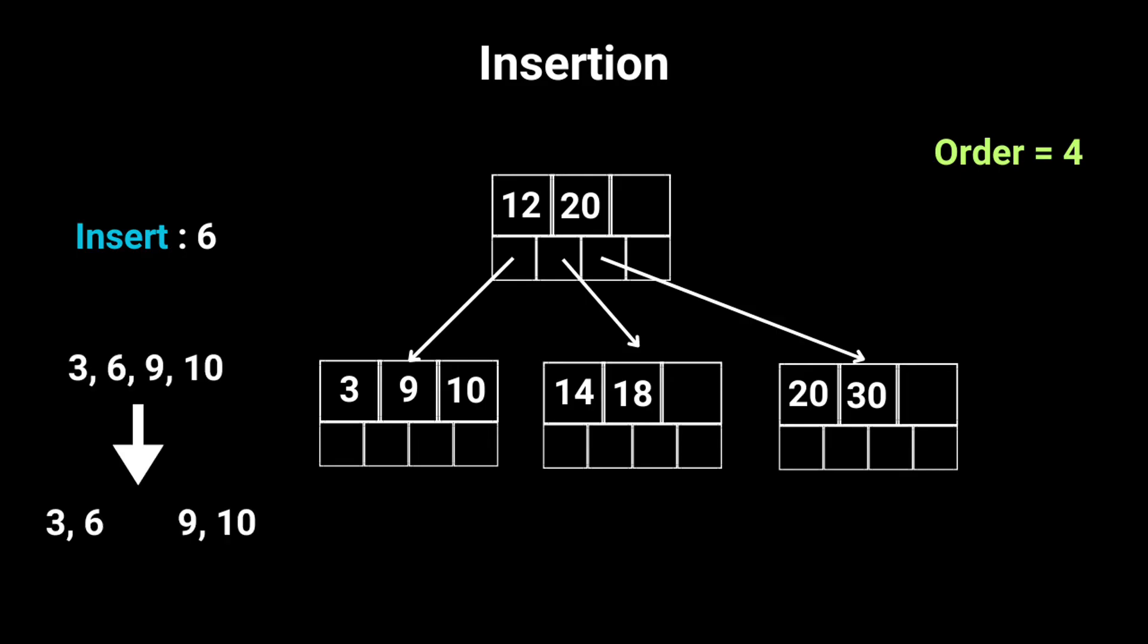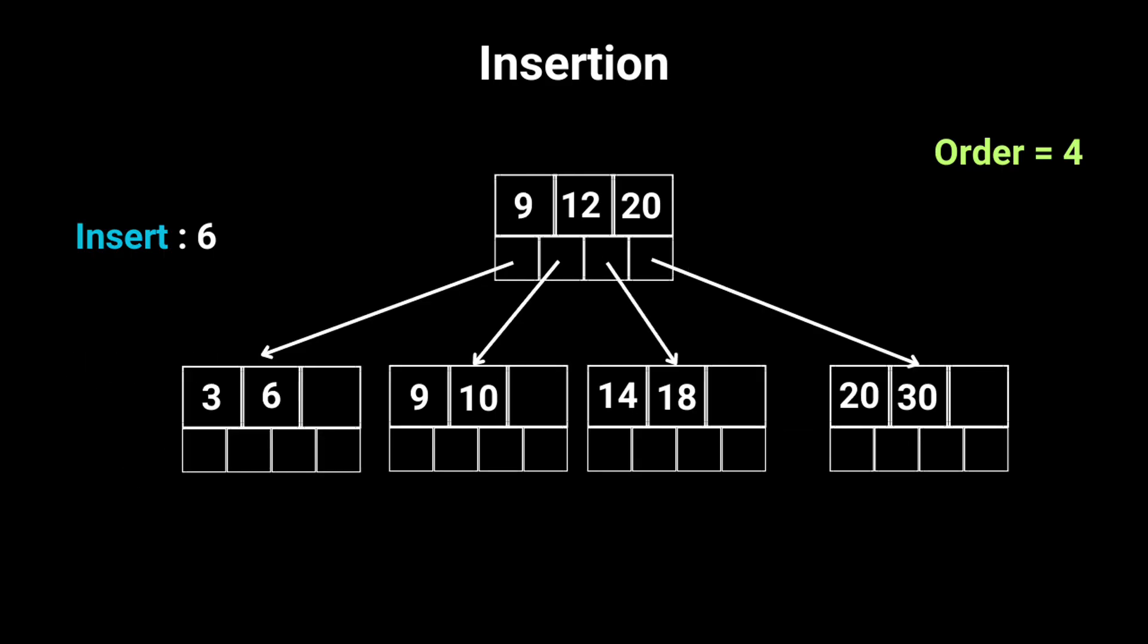3, 6, 9, and 10, and add them to a new node. Don't forget to add the right key to the root, which is 9 this time and that was insertion. I hope this makes sense and helps you understand how we handle new entries in a B plus tree.